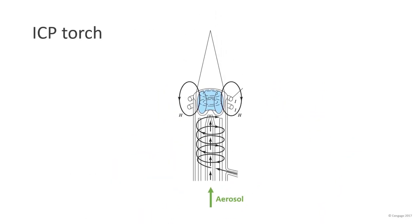The ICP torch is made of three concentric quartz tubes, which argon gas flows through. The sample aerosol is introduced via the central tube. The tangential argon plasma support flow helps cool the inner walls of the central tube.